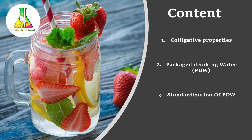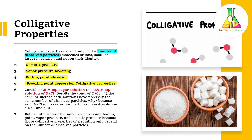We will start our video with colligative properties. Colligative properties are some of the properties which depend only on the number of dissolved solute particles. As you can see on screen, it depends only on the number of dissolved particles, which could be molecules small or large in size in solution, and not on their identity. In our scientific world, we have only four colligative properties.